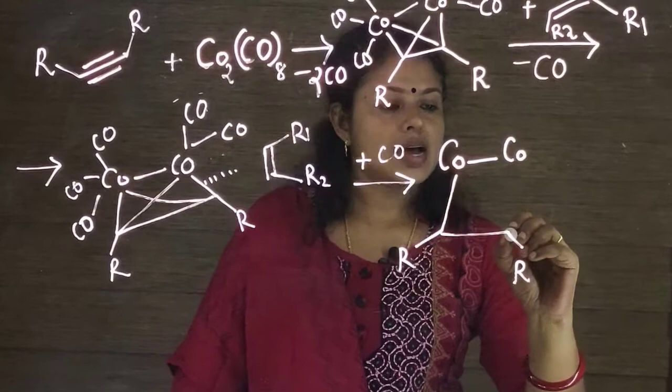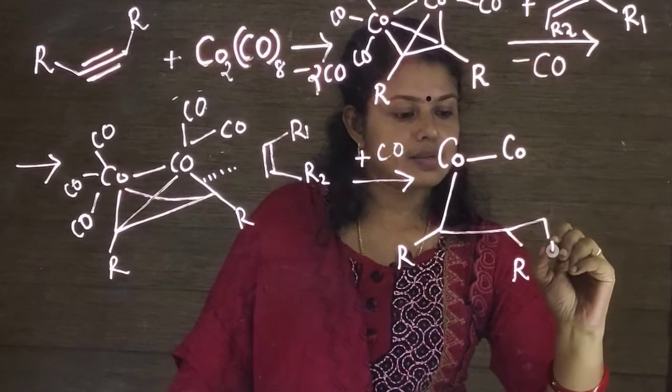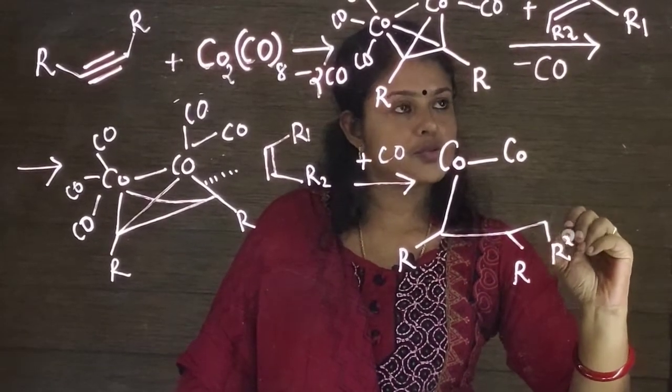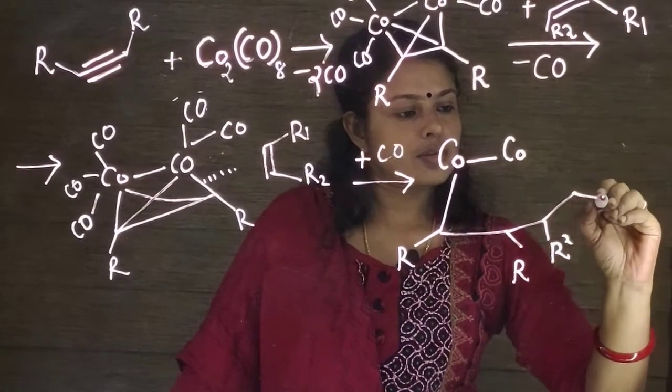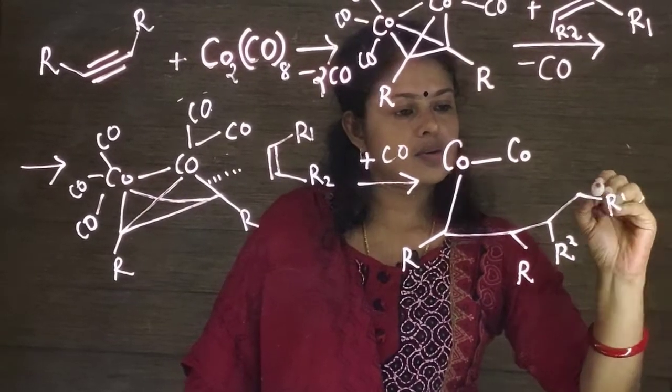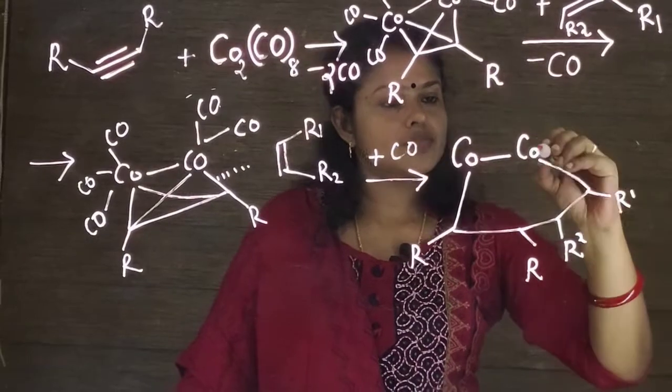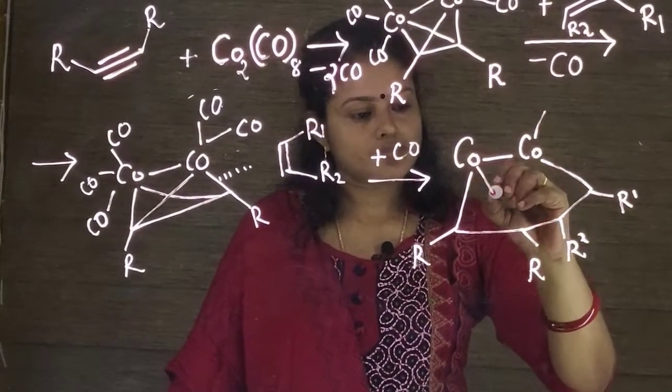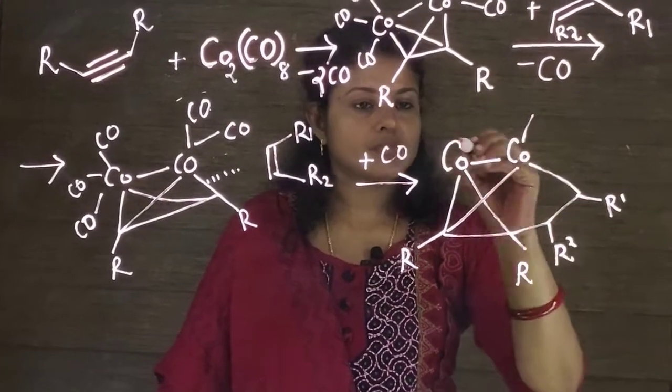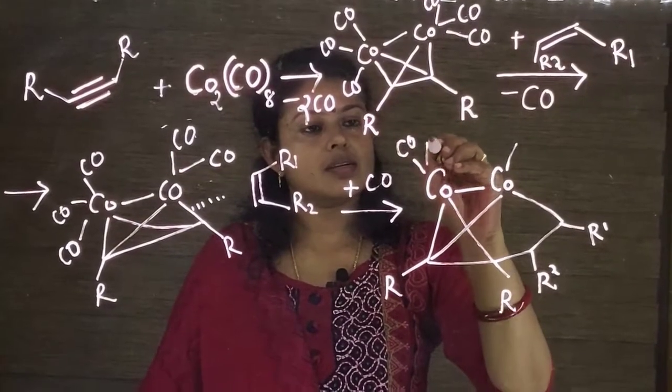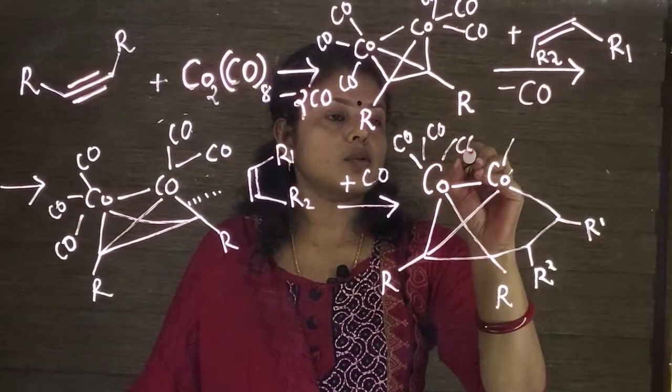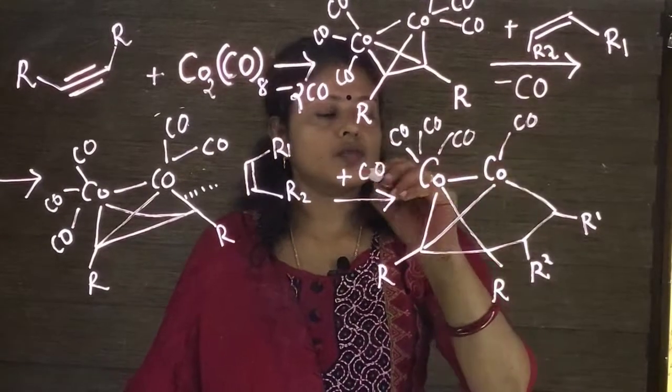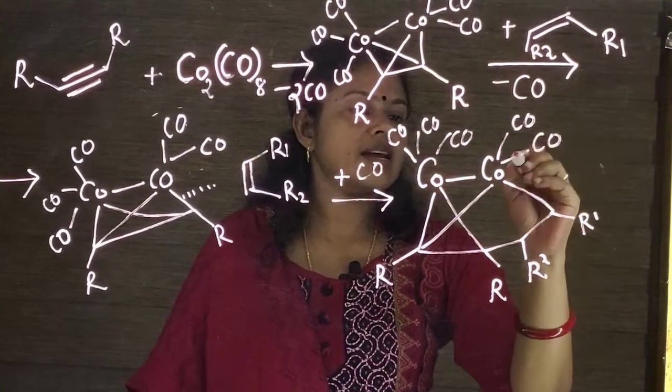So alkene is inserted in between R and CO. So R2, R1, here three carbon monoxide, here also. Now one more carbon monoxide is added.